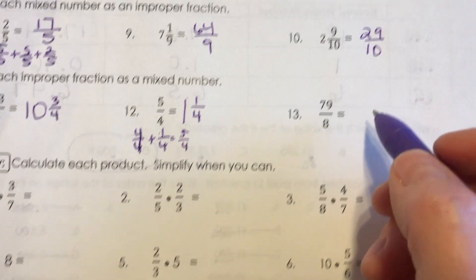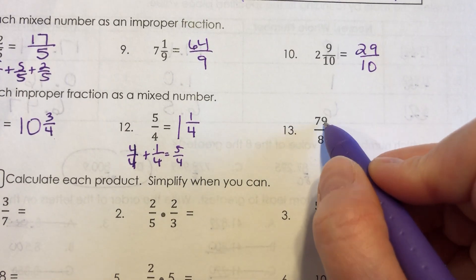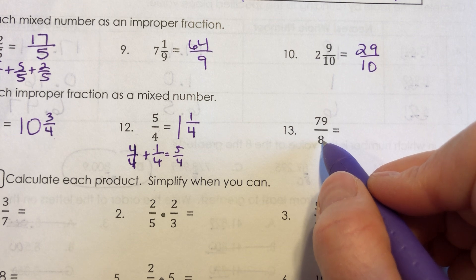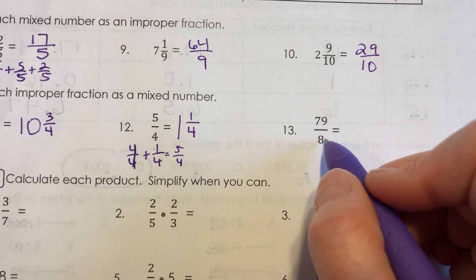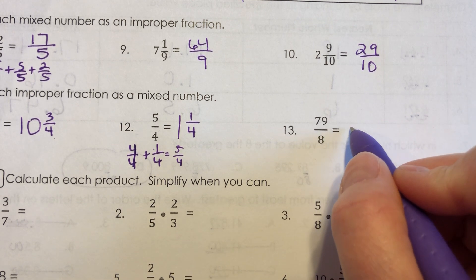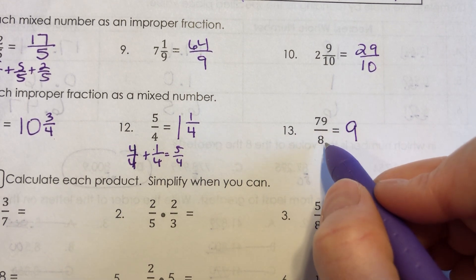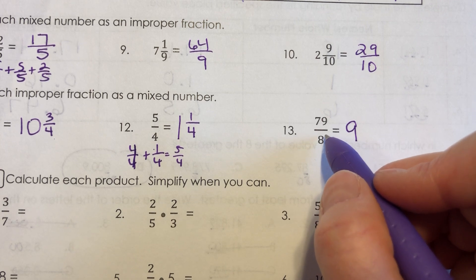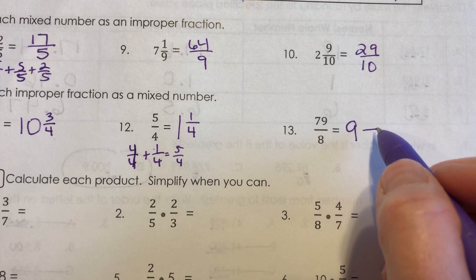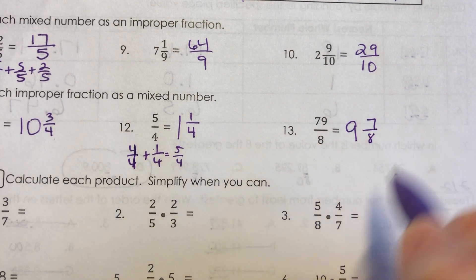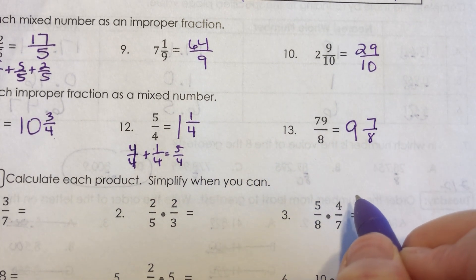For number 13, I can count up from 8 to 79. And I know that 8 times 9 is 72, and 8 times 10 is 80. So it's going to have to be 9. So to get from 72 to 79, how much is left? 7 eighths. So 9 and 7 eighths is what you should have for that.